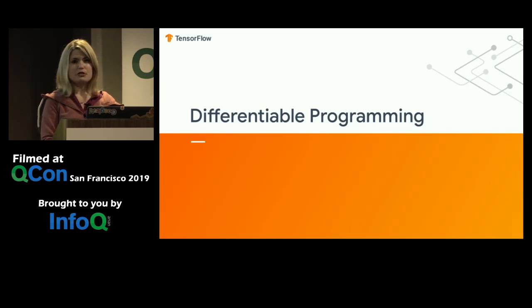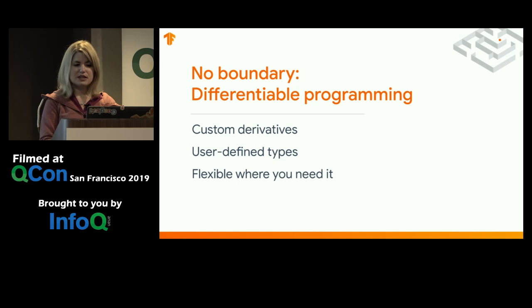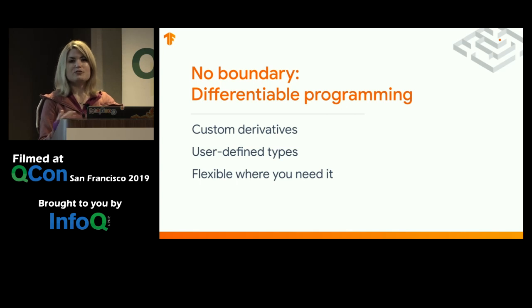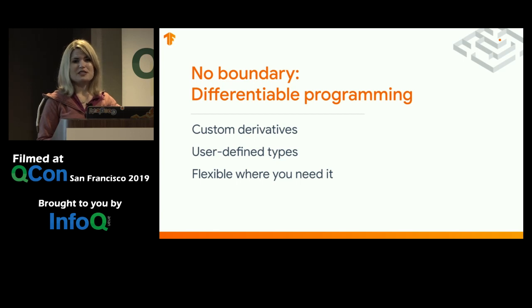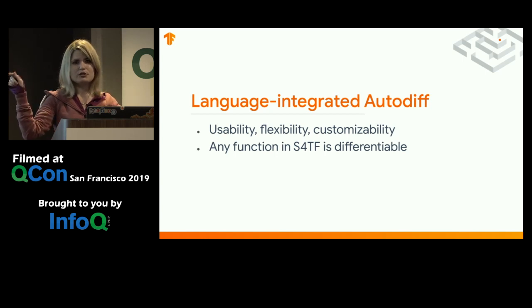We've also integrated differentiable programming directly into the language and are in the process of upstreaming it back to Swift core. This gives you custom derivatives and user-defined types, and it's flexible whenever you need it. Any type in Swift is customizable — instead of having int defined by the standard library, you could define it yourself and also methods that extend it. I mentioned that TPUs require bfloat16 — that no longer becomes a pain in the programming language; you can just create that custom type and use it as you desire. We also have language-integrated auto-diff with the @differentiable annotation, which is being upstreamed to Swift core.